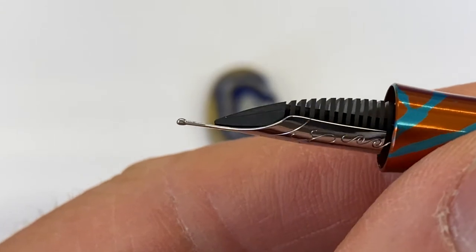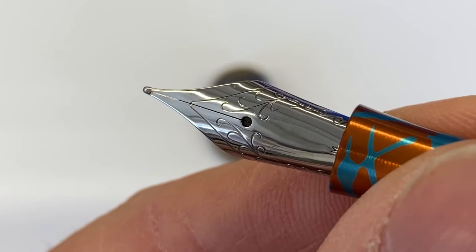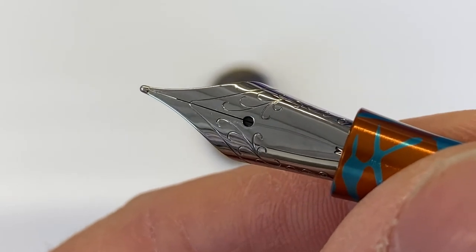I would not advise doing that, but for the sake of this video I am just to show you kind of what happens. So our feed has ink flowing. You can see it kind of in the slit, in the breather hole there. There is ink there.